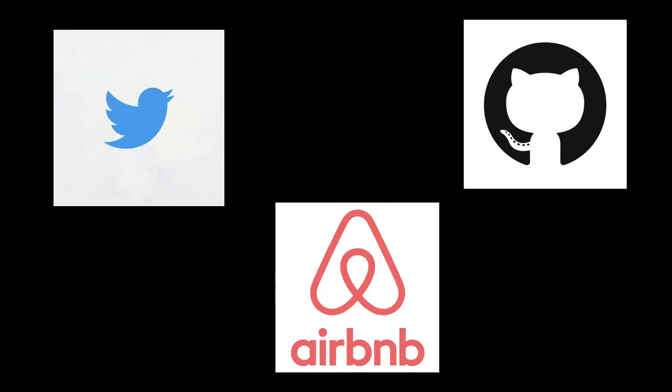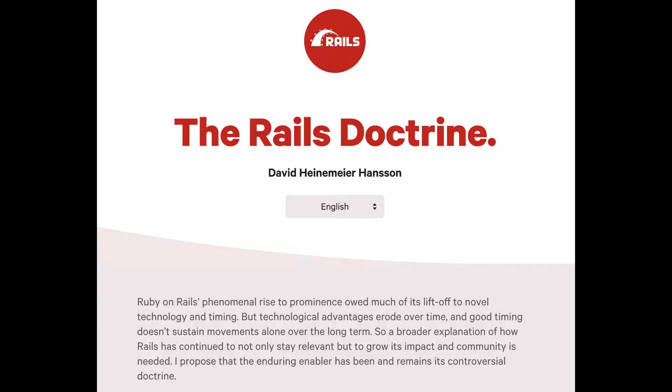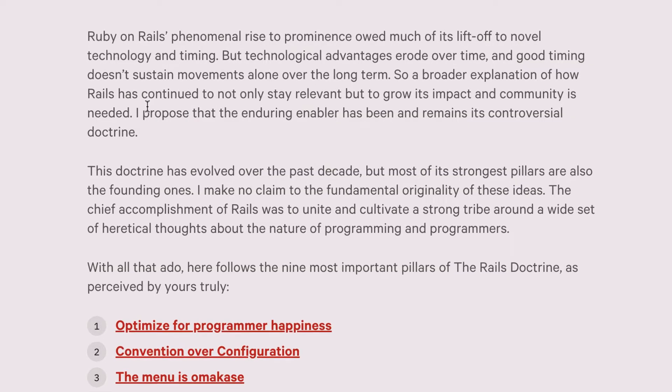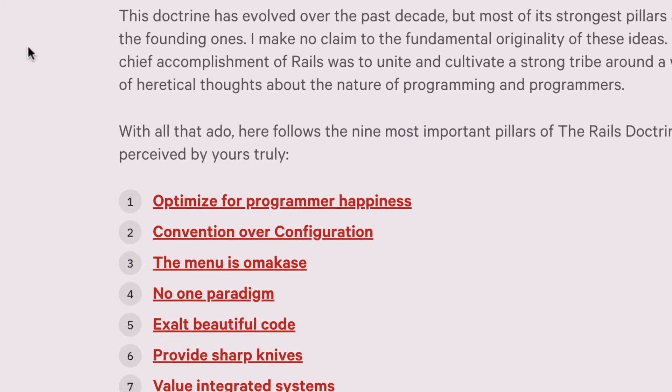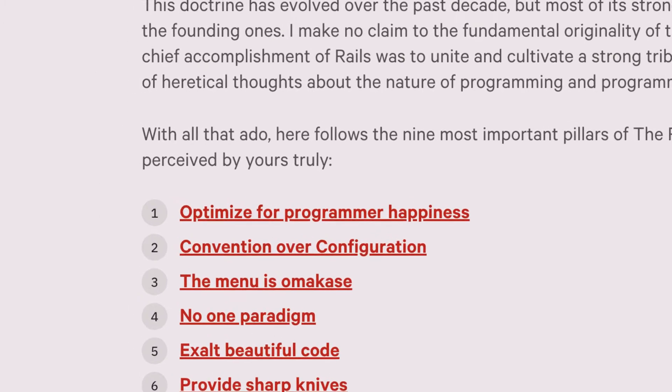Ruby on Rails is quite popular. It was used to build the early versions of Twitter, the early versions of GitHub, and the early versions of Airbnb, if I'm not mistaken. It definitely has made its impact. Here are the tenets or the doctrine that has guided David Heinemeyer Hansen in the development of this web application framework. I'm not going to go over all of these, but I will highlight two or three that I like most.